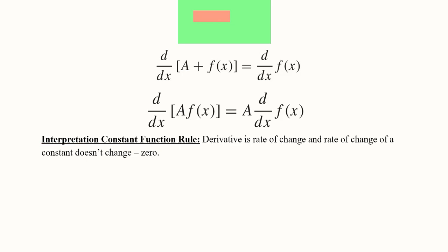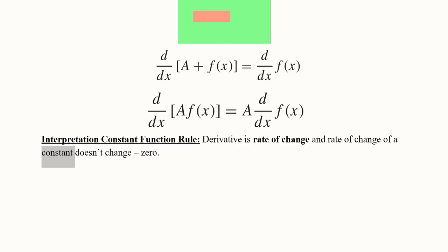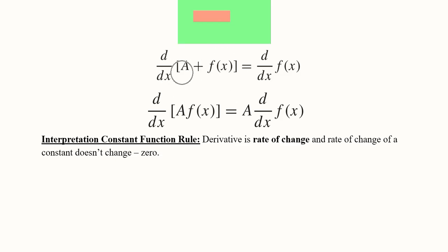The real-life interpretation: the derivative represents the rate of change. To find a rate of change, there must be some change in the value. A constant, by definition, does not change — so its rate of change is zero. This is why the derivative of a constant is zero. In order to have a rate of change, we need a variable, not a constant.